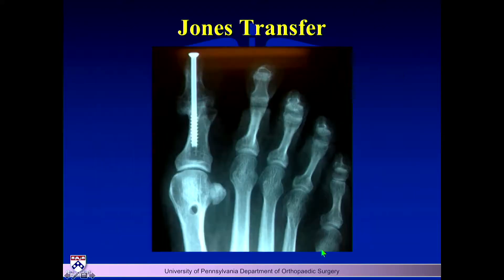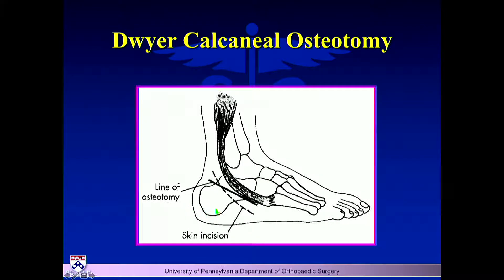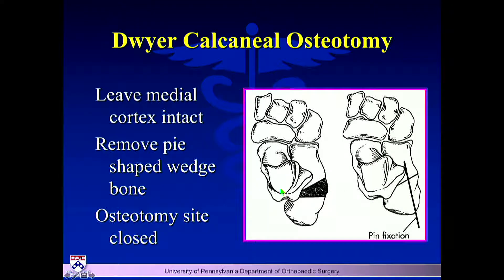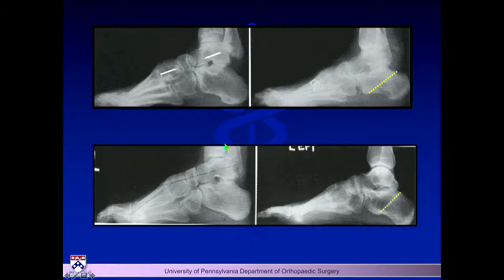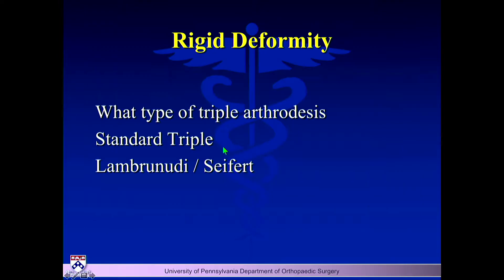After releasing the plantar fascia and doing the dorsiflexion osteotomy with the first toe Jones procedure, we go back and address the hindfoot with a Dwyer calcaneal osteotomy. With this osteotomy you can correct the varus and also elevate the heel — increasing calcaneal pitch — by adjusting the size of the wedge. You can correct in both planes simultaneously, and you can see the result going from a cavus foot with hindfoot and forefoot drive to a corrected plantigrade position.